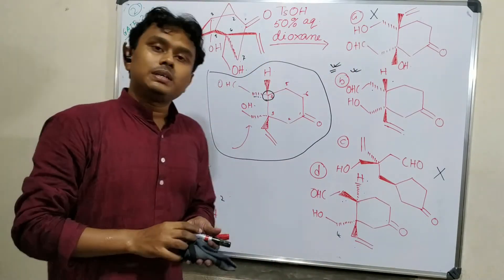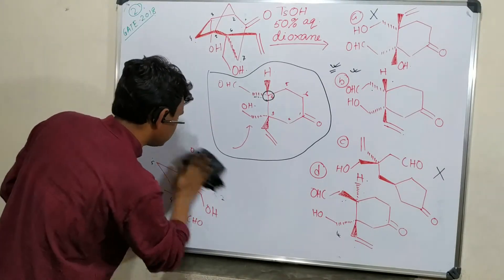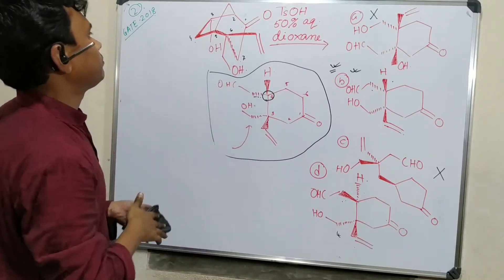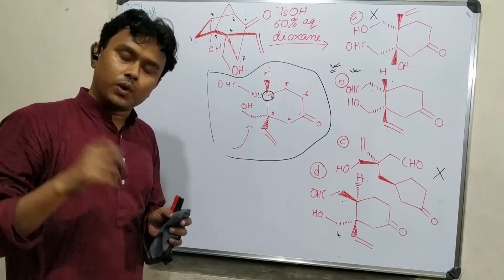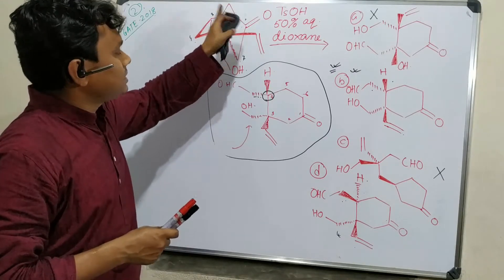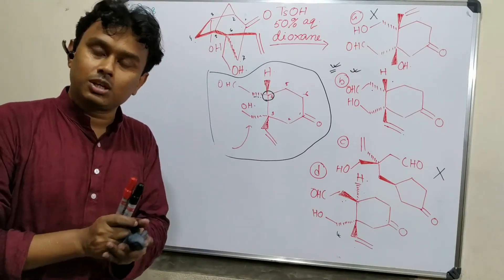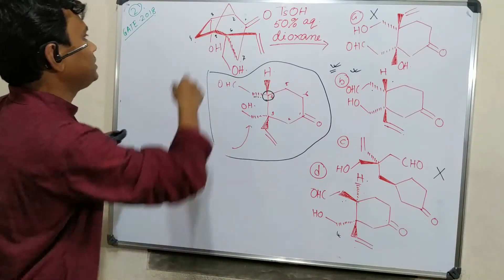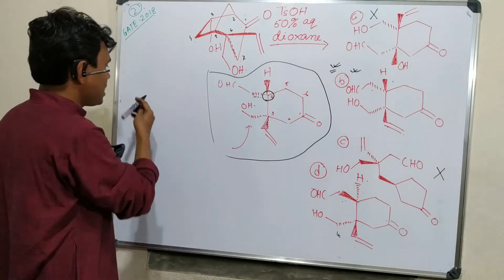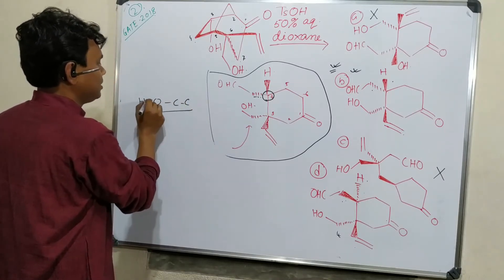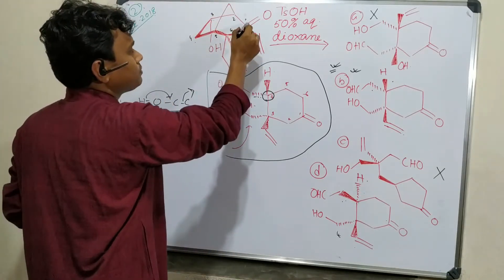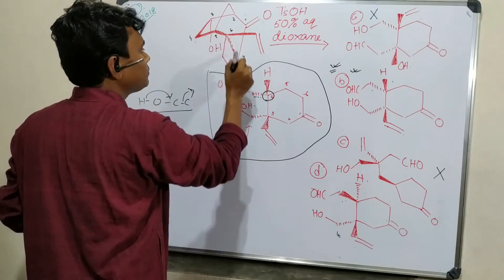Now what is the trick to solve such a question quickly? This is important because you cannot spend too much time in an exam. First, keep in mind retro-aldol means the breaking of the bond formed during aldol condensation. Second, it is stored as retro-aldol so you should not think about forming a double bond. Third, if this reaction breaks, the carbon carbanion will be produced — keep the HOCC disconnection in mind, it will help you.